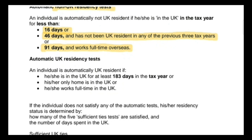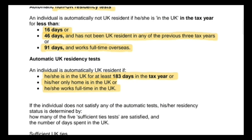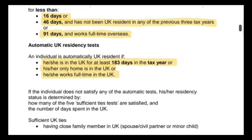For the automatic UK residency test, an individual is automatically UK resident if: they are in the UK for at least 183 days in the tax year; their only home is in the UK (meaning they have one home and that home is in the UK); or they work full time in the UK. If any one of these three points is fulfilled, they are considered an automatic UK resident.